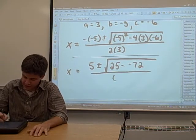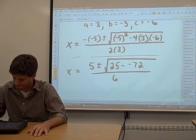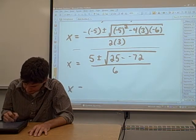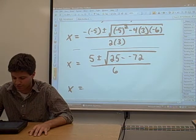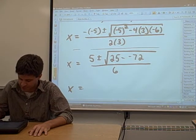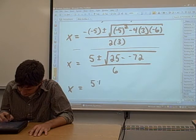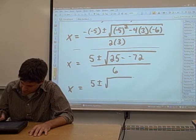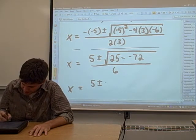2 times 3 is 6, so that's pretty easy to simplify. We need to simplify it a little bit further. This stuff under the square root is not as simple as it can be. 25 minus a negative 72.